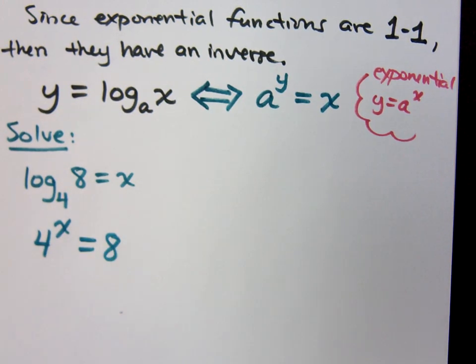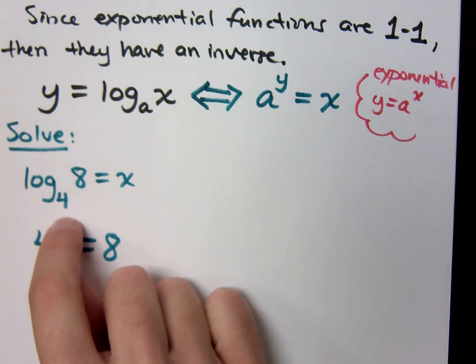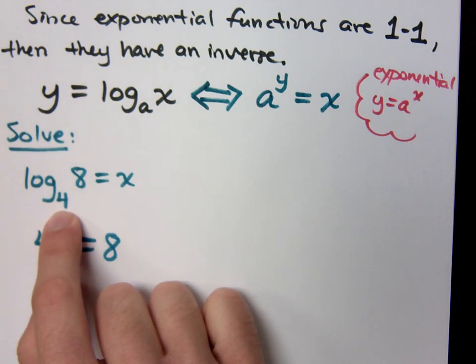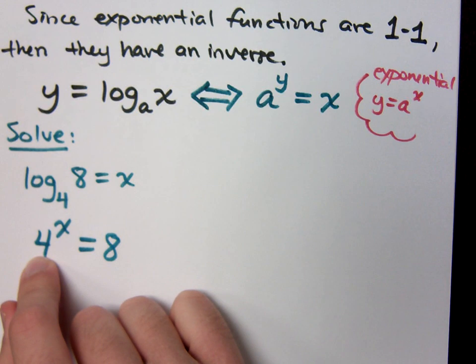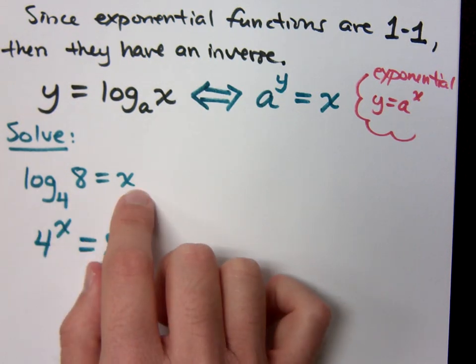Now, this is the way my mind works to get it right. I call this guy the base, right? For the logarithmic function, this is the base. That means in the exponential expression, he's also the base, right? I just have to figure out what is his exponent. His exponent is the answer of the log.